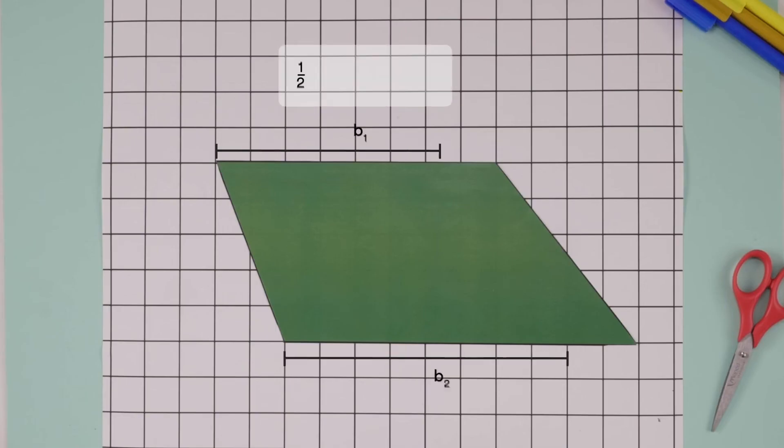This way you can find the area of any trapezium. It's simply half of the sum of its parallel sides times height.